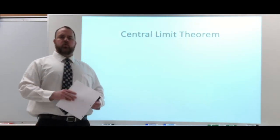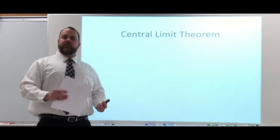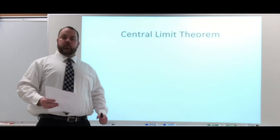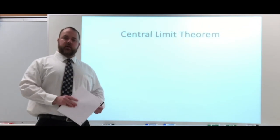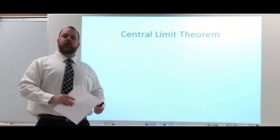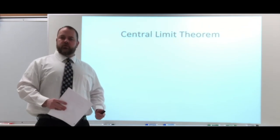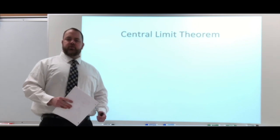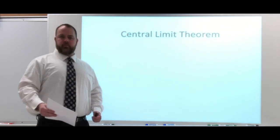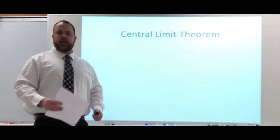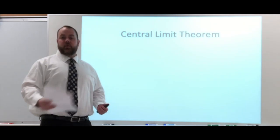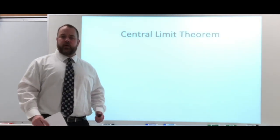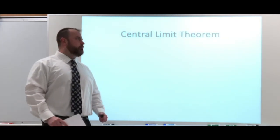Section 5.1 was all about using the normal curve to find probability. We talked about three methods: the 68-95-99.7 rule, the Z-score and using that chart to find probability, and also the normal curve function. So you have three different ways you could find probability.